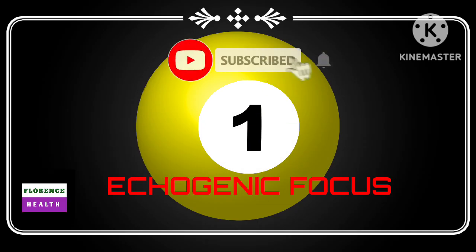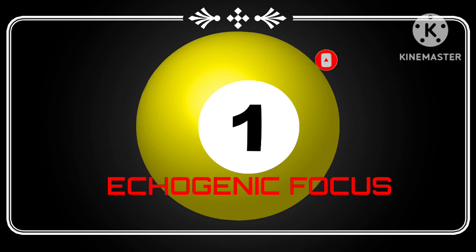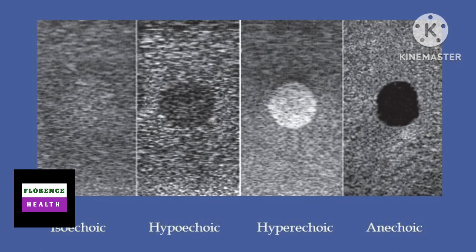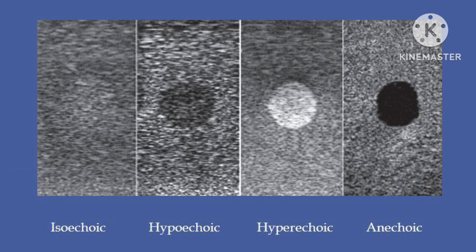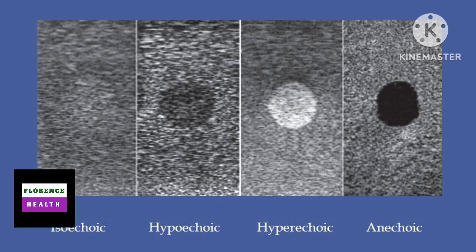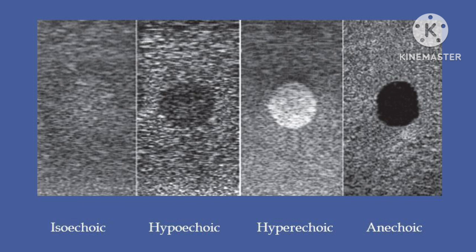Let us discuss about echogenic focus. What do you mean by echogenic focus? A focus is echogenic — that means that focus has more level of echoes, meaning that focus is more bright or more white in color.